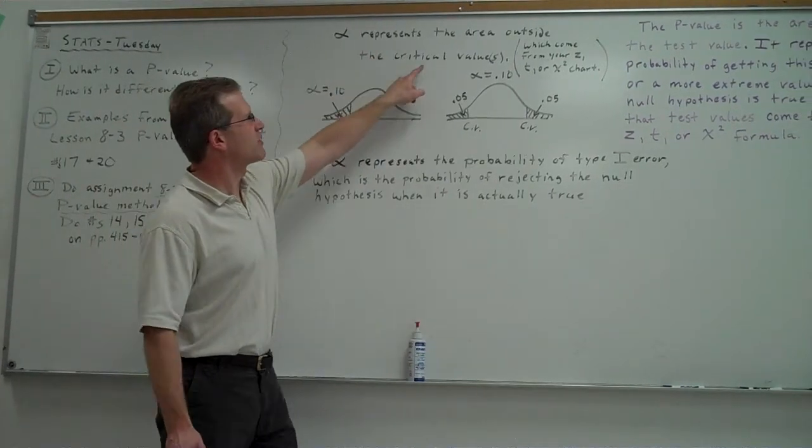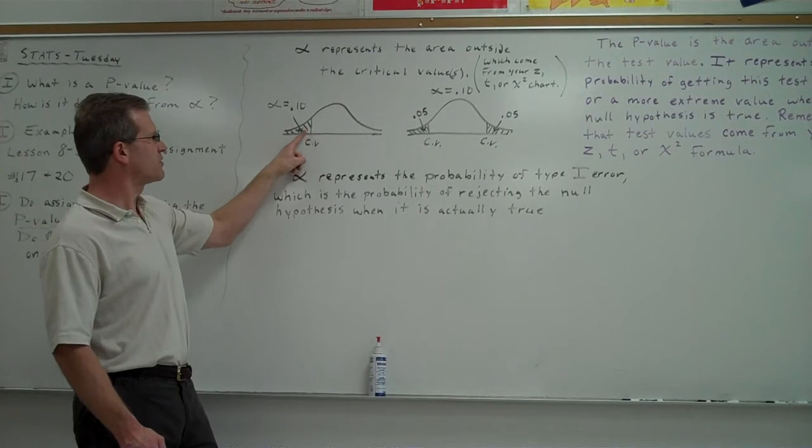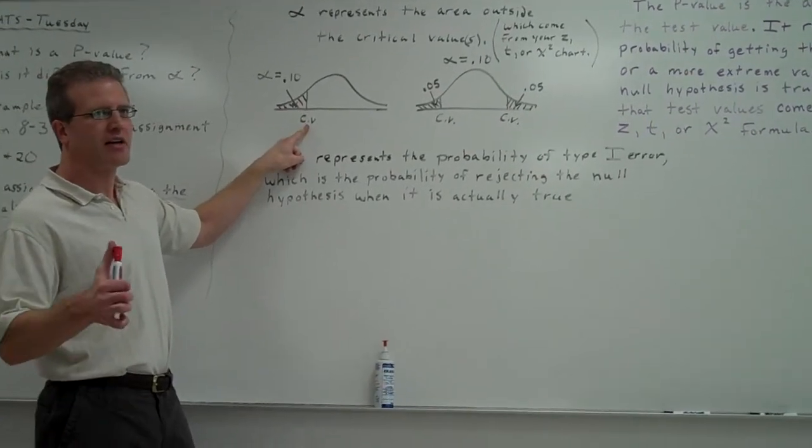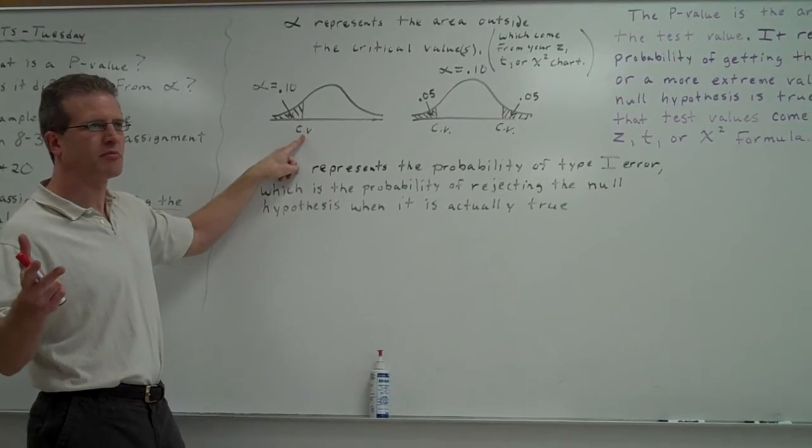Alpha represents the area outside the critical values. So if it's a left-tailed test, for example, alpha would be the area to the left of that critical value. Now that critical value could be a z, a t, or a chi-square, depending on what type of problem you're doing.